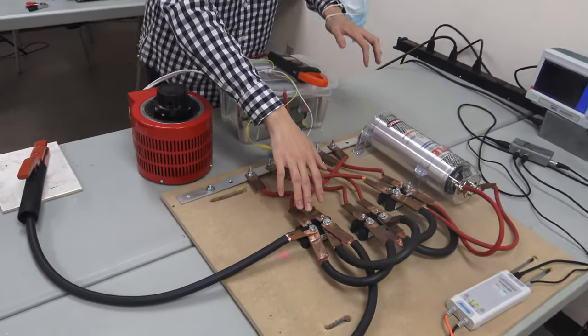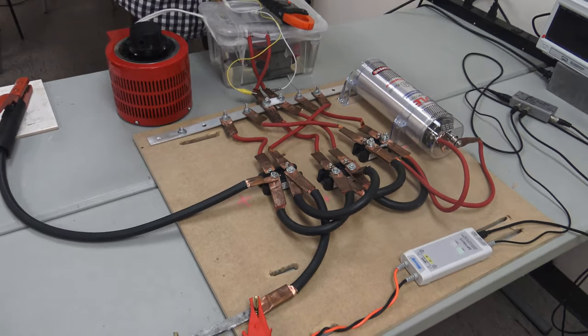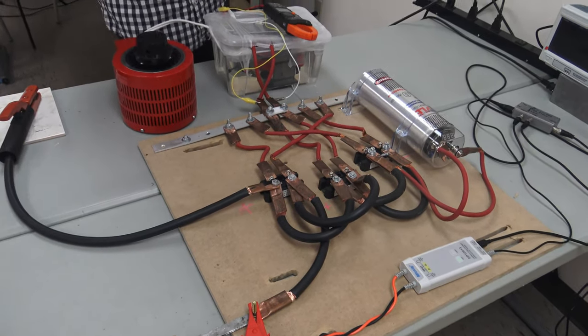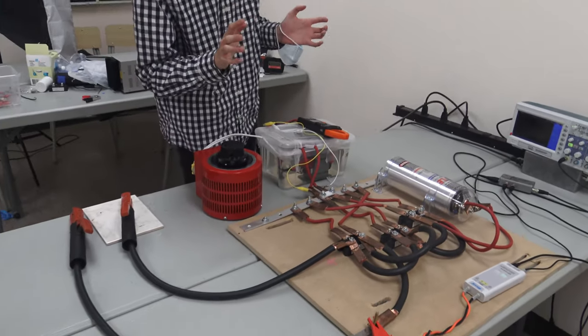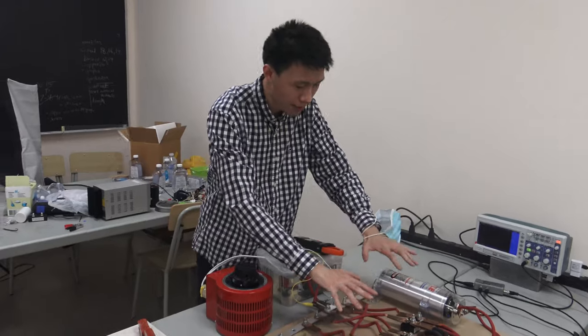So what we have is we have three full bridge rectifiers, each can handle 150 amps. Although at the end the system can't actually deliver 150 amps, but anyway. So we have AC on the red lines going in and then we have DC coming out from the other end.